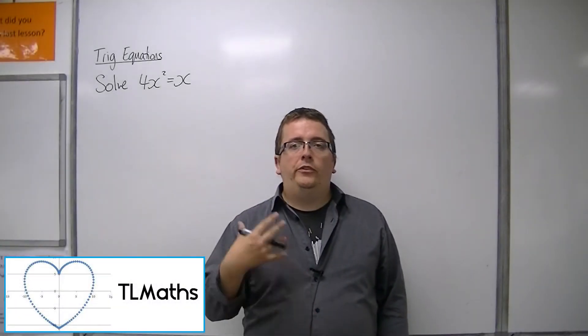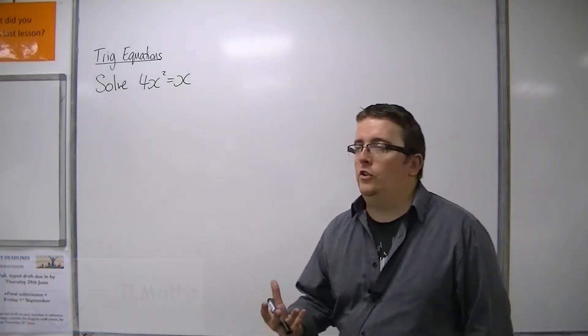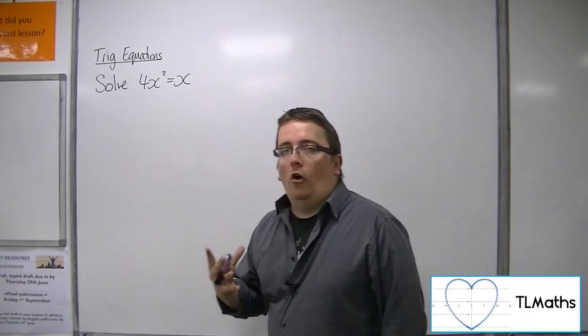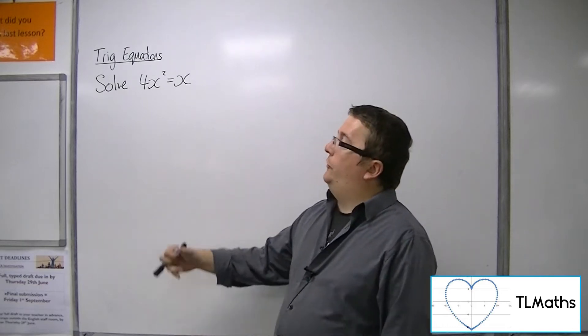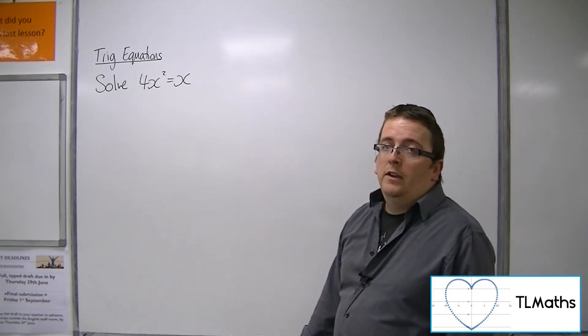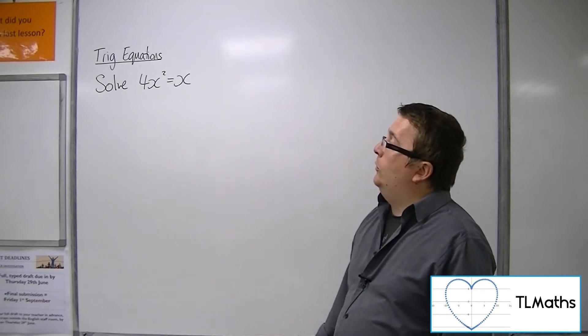In order to solve some of the trigonometric equations that are coming up, we need to make sure that we're not making any mistakes when solving algebraic equations like this. So 4x squared equals x.